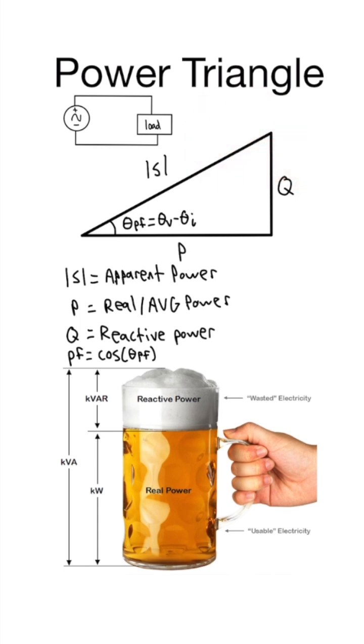So we can get this thing called reactive power, average power, and adding those two in quadrature, you get apparent power. So apparent power is what you pay for. You're paying for the whole beer. Real power is what you get to use, and reactive power is all the foam.